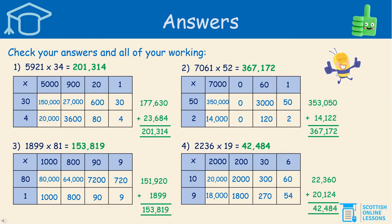I'm going to read through the answers. Number 1 was 5,921 times 34, and that gave us the answer 201,314. Number 2: 7,061 times 52 equals 367,172. Number 3: 1,899 multiplied by 81 gives us the answer 153,819. And lastly, question number 4: 2,236 multiplied by 19 equals 42,484. Those are the answers for those four questions.